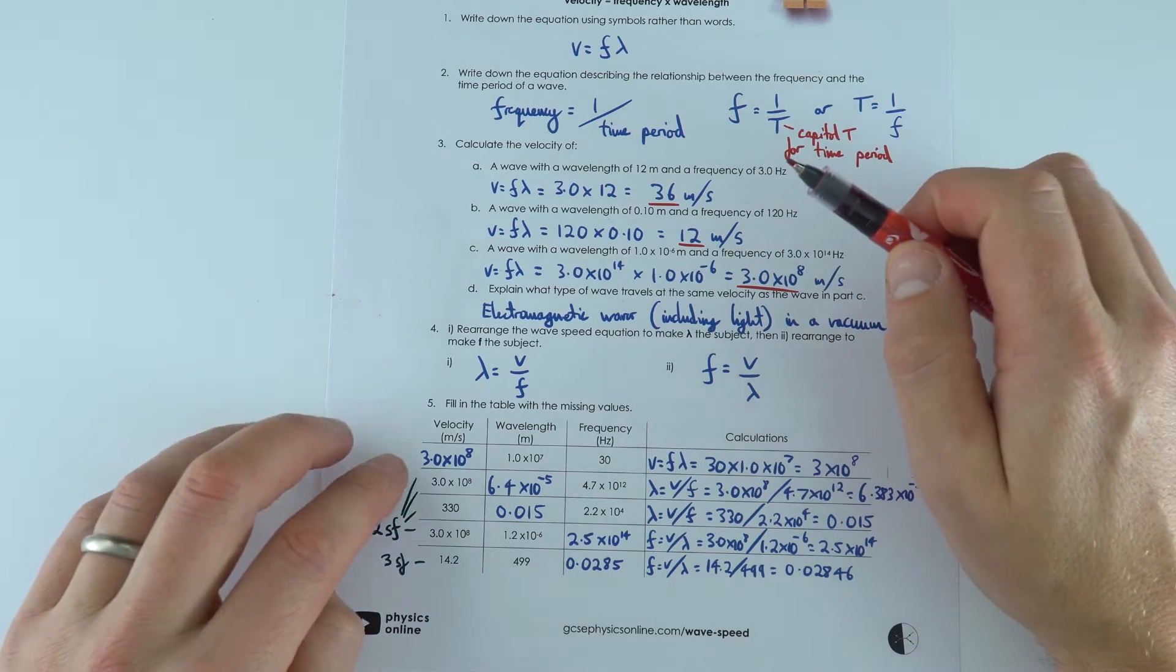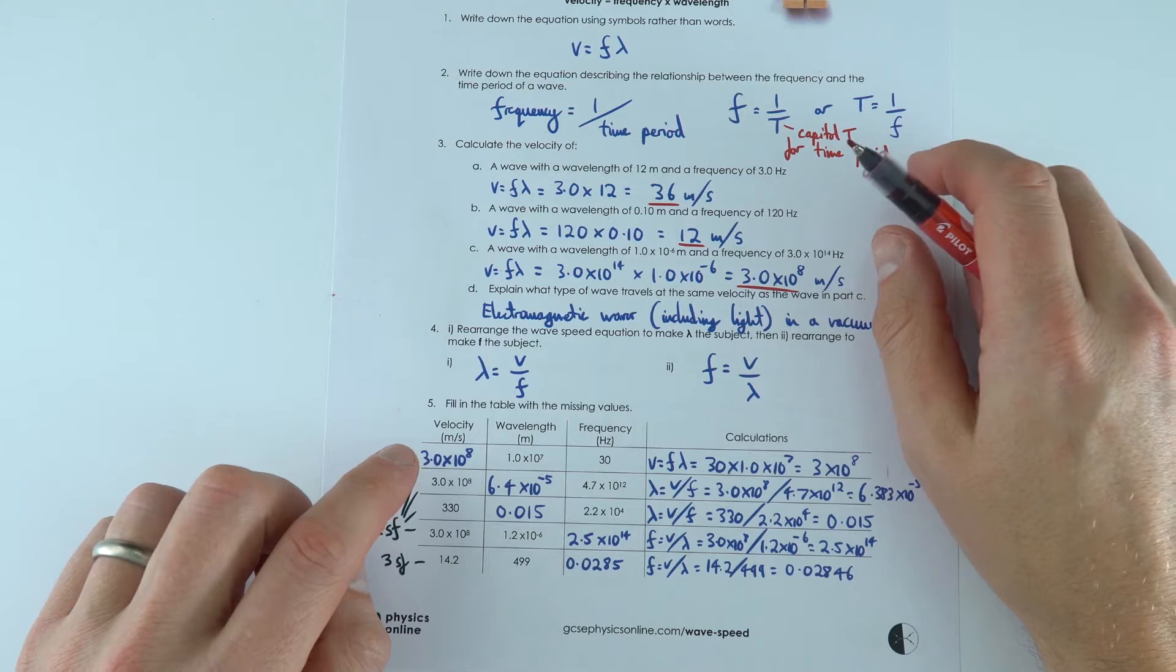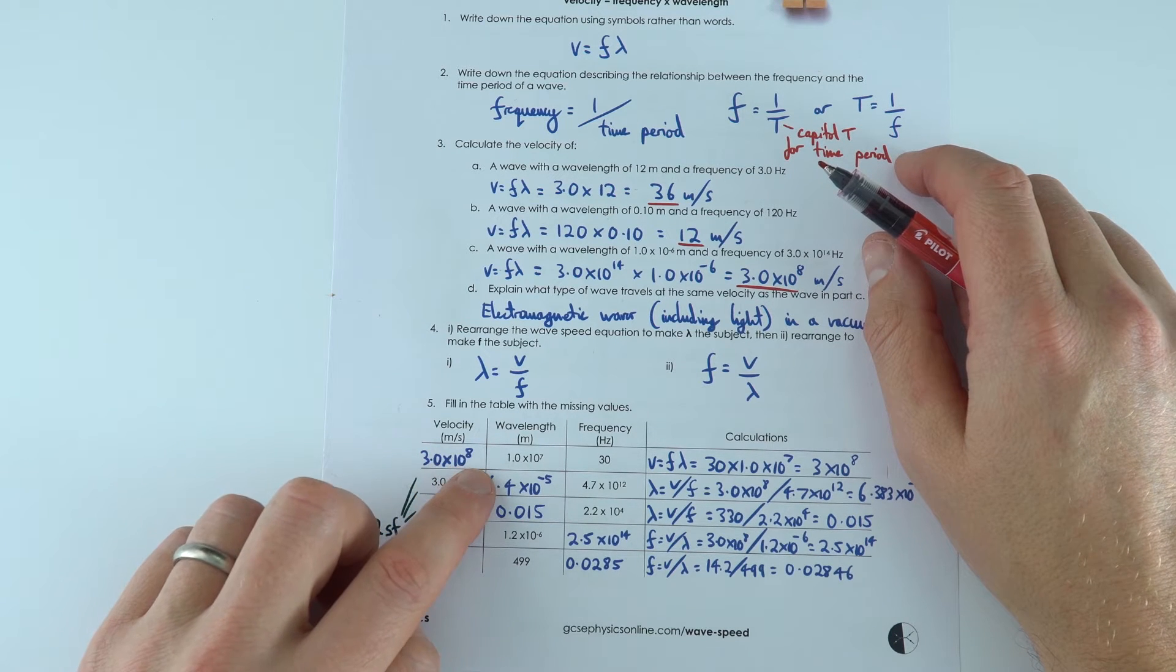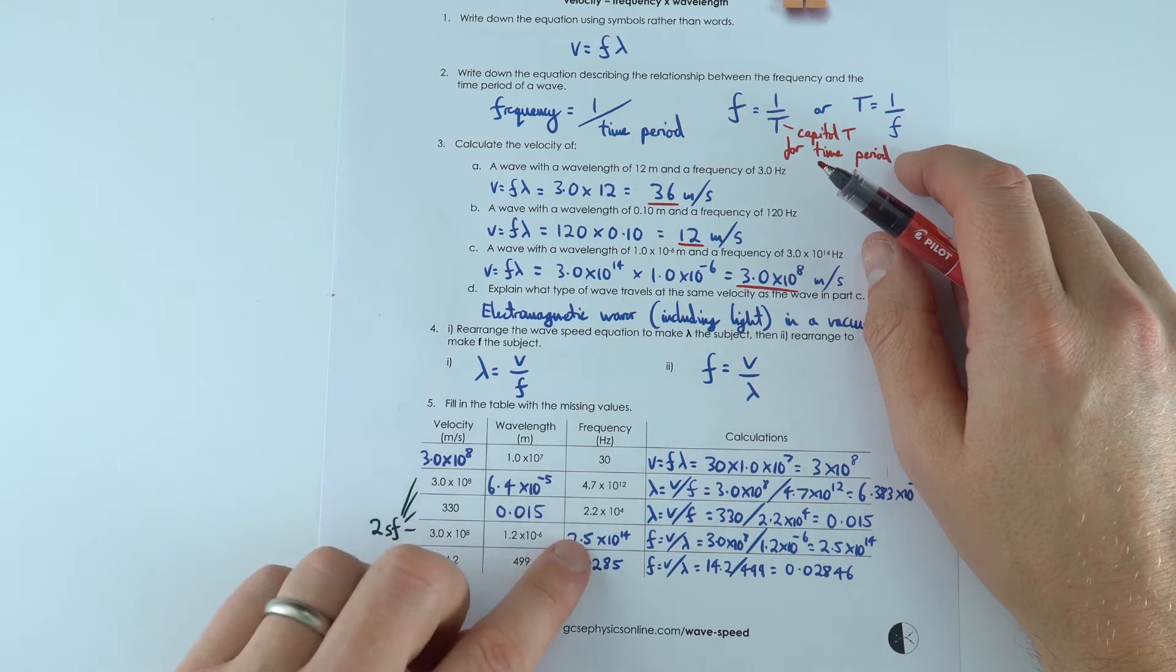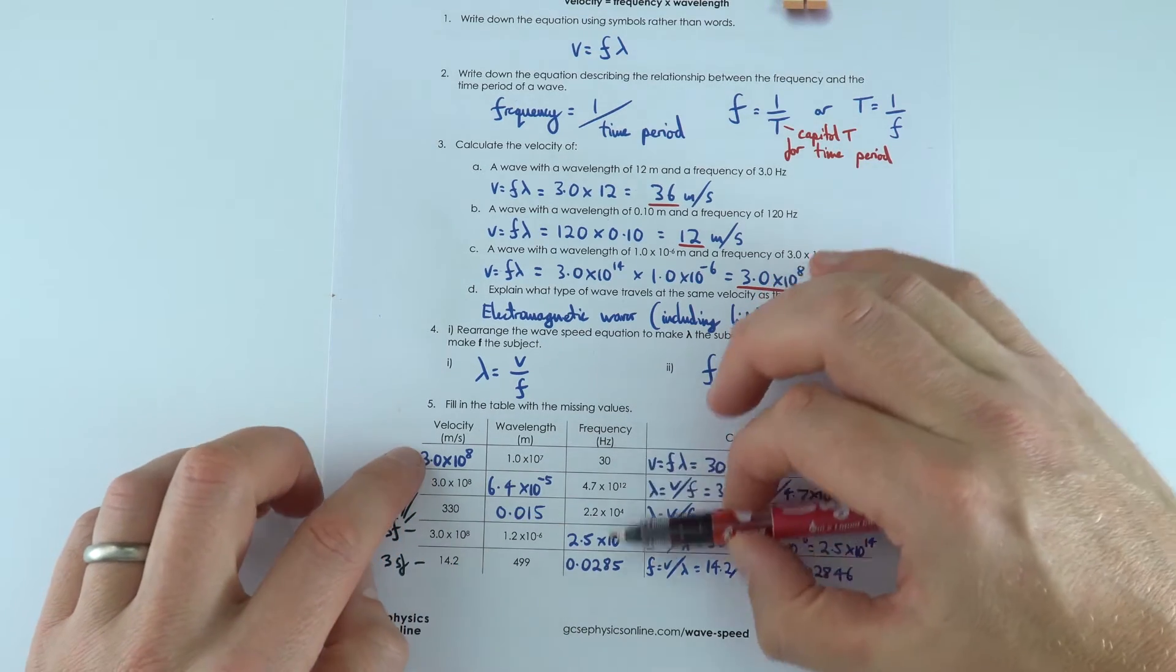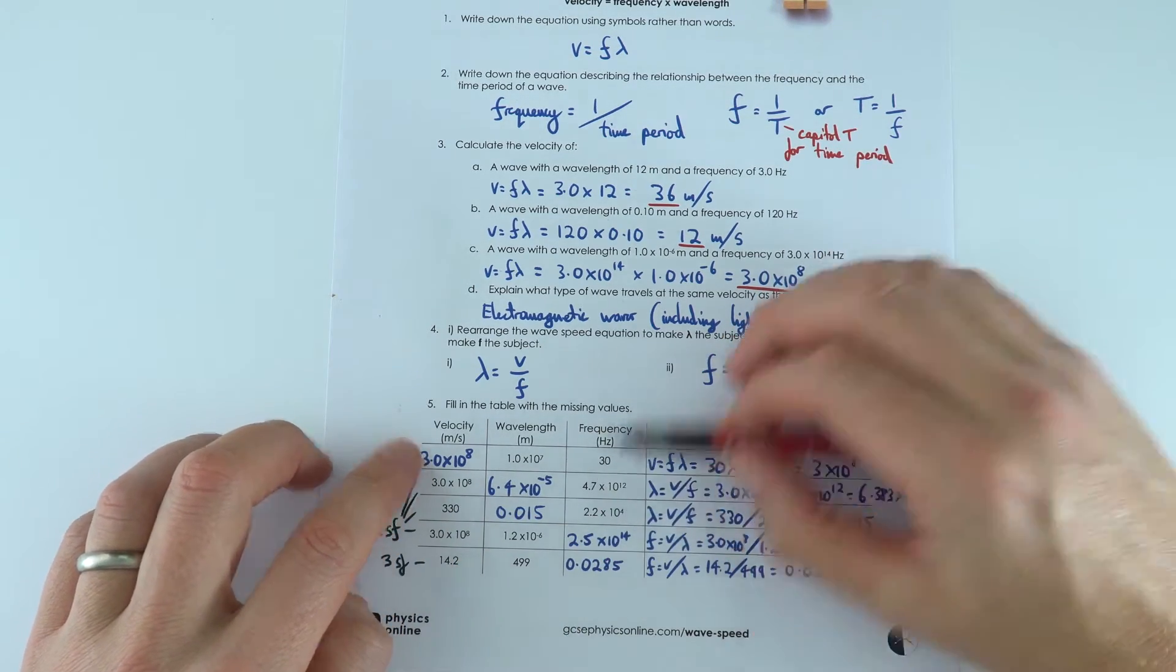And when you're looking especially at electromagnetic waves, because we have very high speeds, we've often got very short wavelengths and really high frequencies. So it's really worth getting to grips with using standard form on a calculator for these.